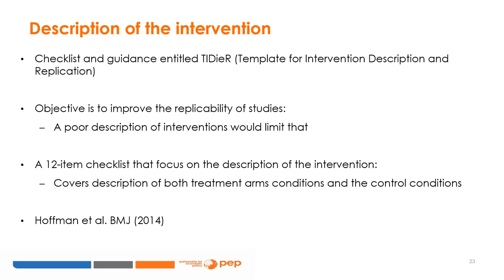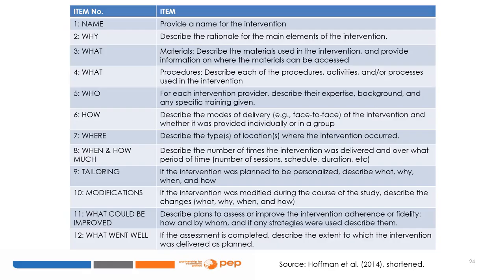Let's focus on one of the items in the outline — namely, the description of the intervention, which is often poorly described in most impact evaluation studies. The description of the intervention becomes informative when researchers follow the TIDIER guidelines, where TIDIER stands for Template for Intervention Description and Replication. This makes replication easier. It consists of a 12-item checklist covering the description of treatment arms conditions and the control conditions, described in a British Medical Journal publication by Hoffman et al., 2014.